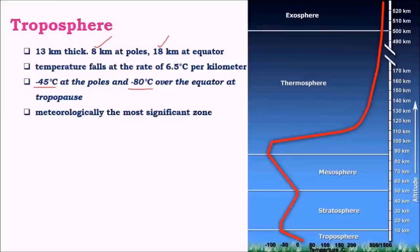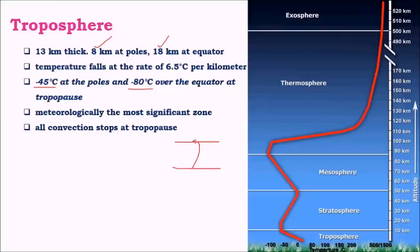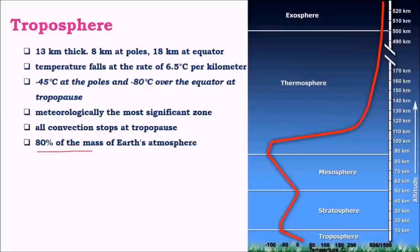Troposphere is the meteorologically most important layer, as most weather phenomena like precipitation, clouds, wind systems, and pressure systems occur here. Beyond this layer, these features become less significant, and all convection stops here — the rainfall activity due to the convection cycle does not extend beyond troposphere. About 80% of the mass of earth's atmosphere is located in troposphere due to its greater density, as all upper layers are much less dense.